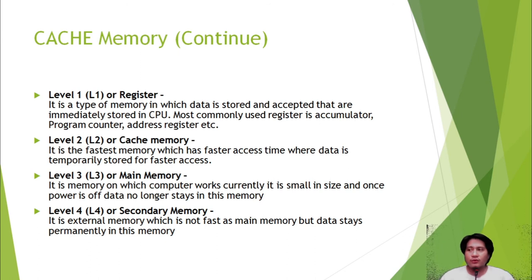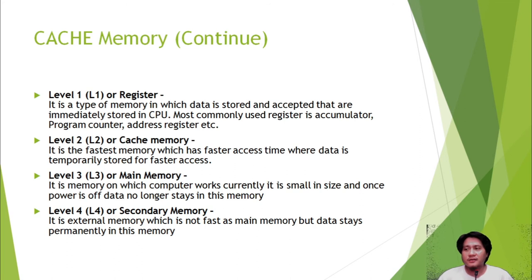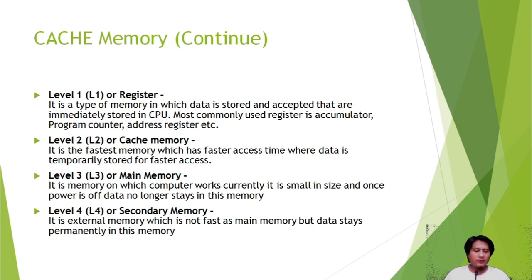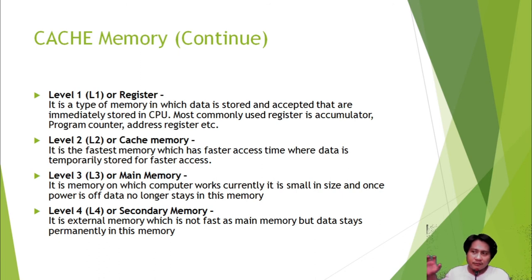Level 2 cache memory is the fastest memory with faster access time, where data is temporarily stored for quick access. In the fish vendor analogy, the box of 20 kilos beside the stall represents the L2 cache memory.